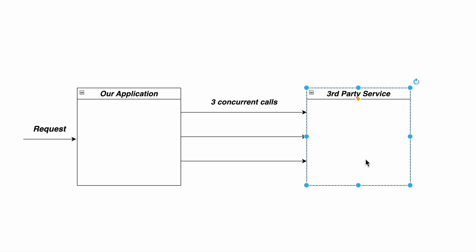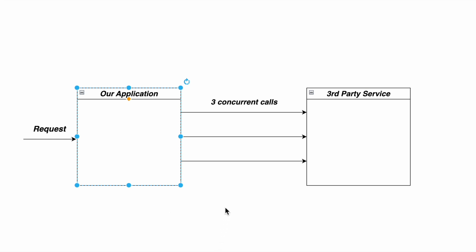Due to some constraints, the third-party service could be accessed only by a limited number of threads at a given point of time. For example, only three concurrent calls would be allowed to this third-party service from our application. In order to implement such a scenario, we need to ensure that we have some sort of restriction in place, and in such situations we can think of making use of the semaphore.